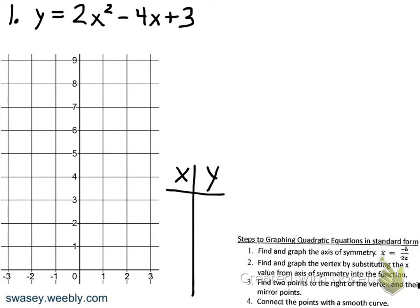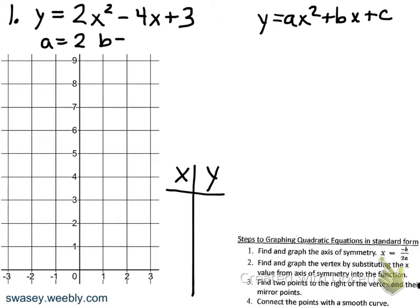Some students asked if I could make a video on graphing quadratic equations in standard form, so here it is. Our goal is to graph it, and at the end we will list the domain and the range. A quadratic in standard form is y equals ax squared plus bx plus c. Here, a is the coefficient on the x squared term, b is the coefficient on the x term, and c is your constant.